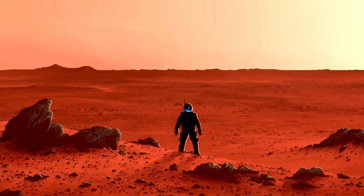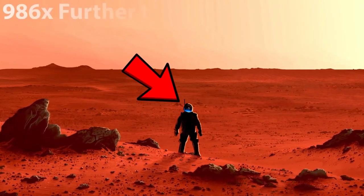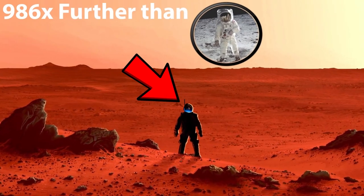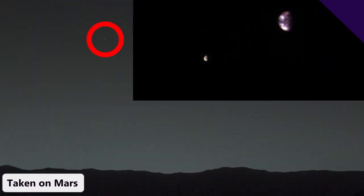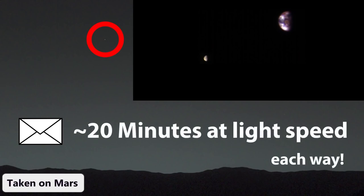That means that whenever humanity finally gets around to landing a human on the planet, that person will be 986 times further away from Earth than the astronauts who landed on the moon were. In addition, the time delay for sending a message from Mars back to Earth isn't just two and a half seconds, it's actually more like 20 minutes each direction, which would render instant communication in the event of an emergency impossible.